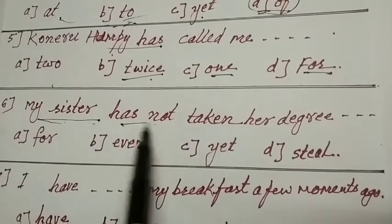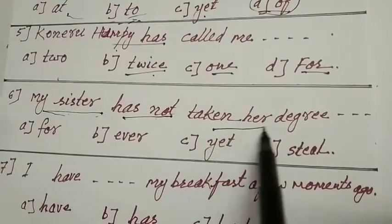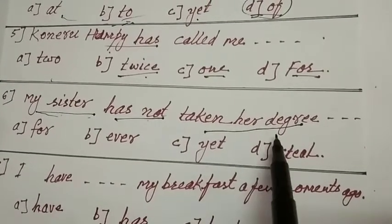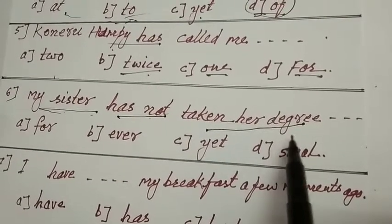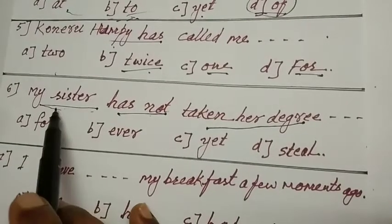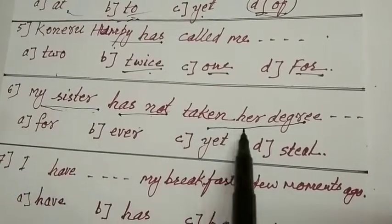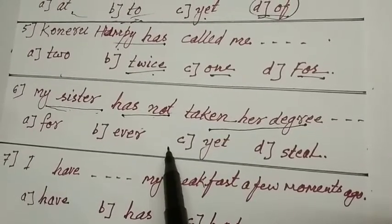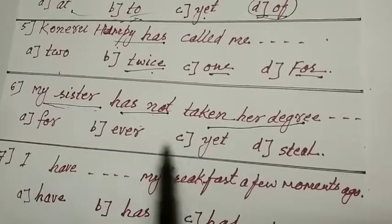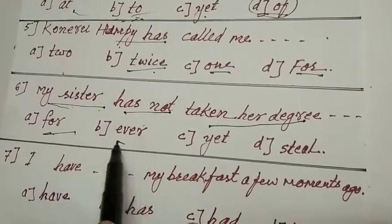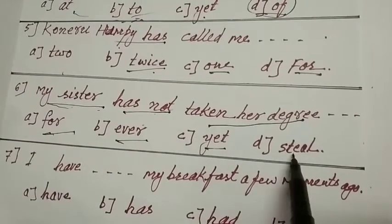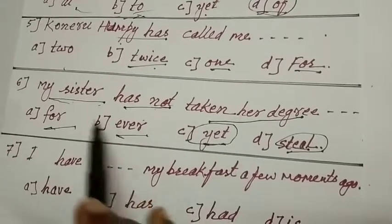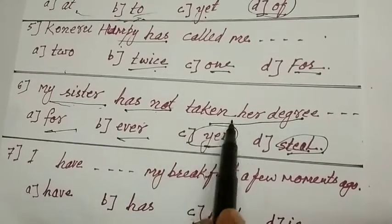Next, sixth one. My sister has not taken her degree. Sister who take degree. My sister degree has not taken, when? Far or ever or yet or still? My sister has not taken her degree yet. C is your answer.